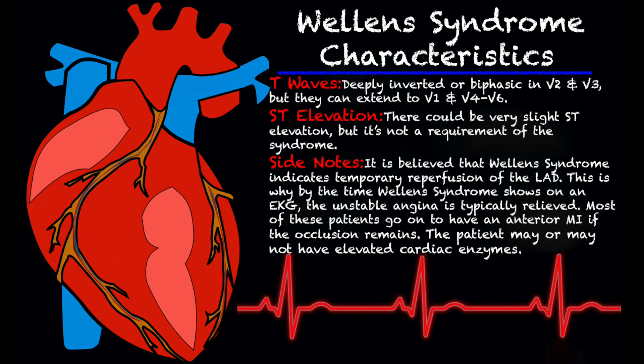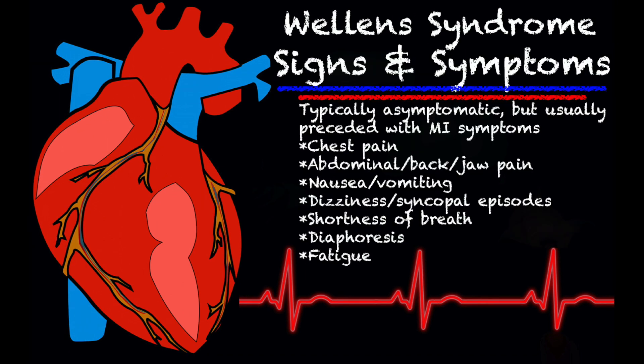The patient may or may not have elevated cardiac enzymes or troponin. Some signs and symptoms of Wellens' syndrome: typically they're already asymptomatic by the time this is noted on a 12-lead, but before that they're usually preceded with MI symptoms — chest pain, abdominal, back, or jaw pain, nausea and vomiting, dizziness or syncopal episodes, shortness of breath, diaphoresis, and fatigue.